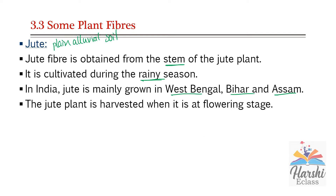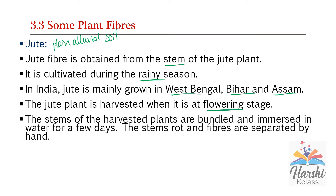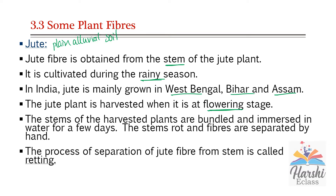The jute plant is harvested when it is at the flowering stage. After harvesting, the plants are bundled together and immersed in water for a few days — around two to three weeks — so that the stems rot and the fibers present in those stems are loosened. It is then easy to separate the fibers from the stem by hand. This process of separation of jute fiber from the stem is called retting.